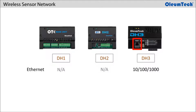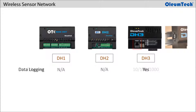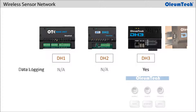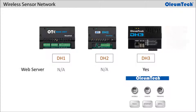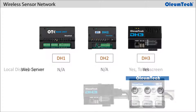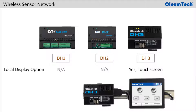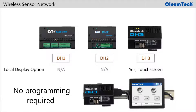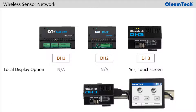Only the DH3 is equipped with an Ethernet port and supports data logging and trending. Its trending data and device properties can be accessed remotely through its web server. OliumTech offers an optional local LCD display for the DH3 that requires zero programming to view its Modbus registers and device properties.